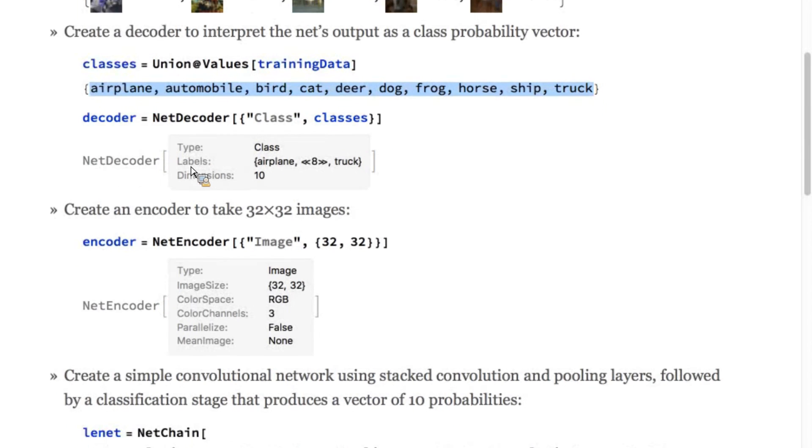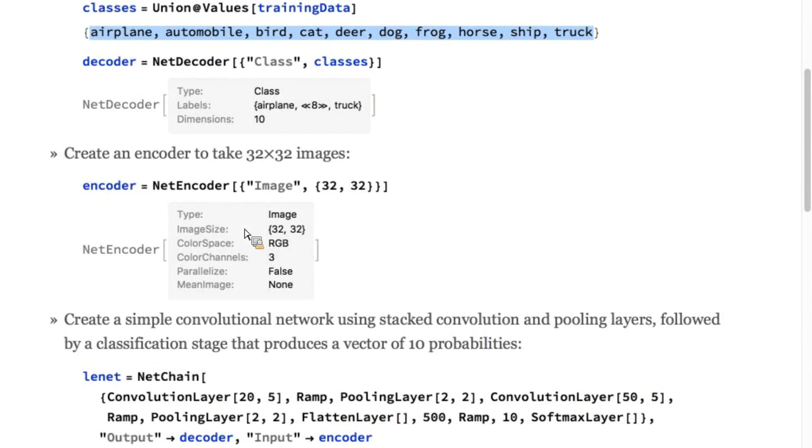Then, we'll create an encoder to take the images and turn them into three tensors. Here's the encoder.